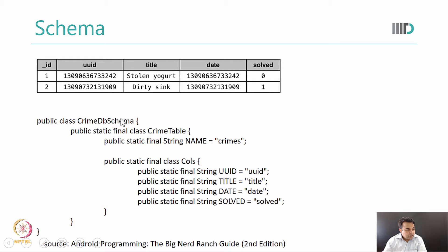We need to store these four values: UUID, title, date, and solve. For example, this could be our schema where we can say there is a field for ID, title, date, and so on, with the values they hold. By looking at this, I can very easily see what kinds of columns I am going to have — the column entries would be divided into UUID, title, date, and so on.